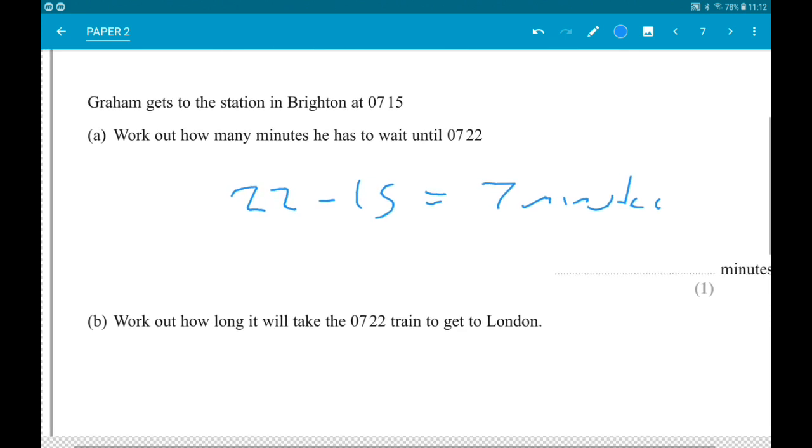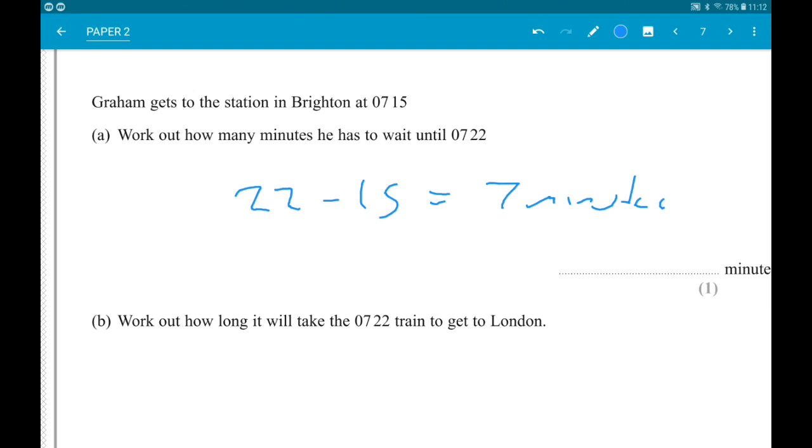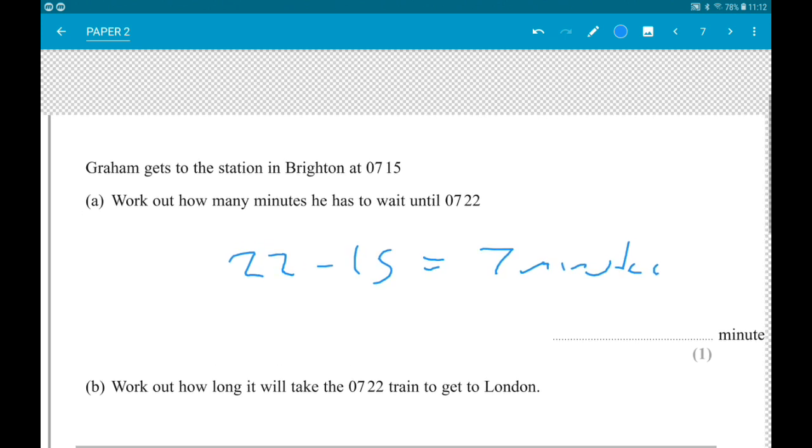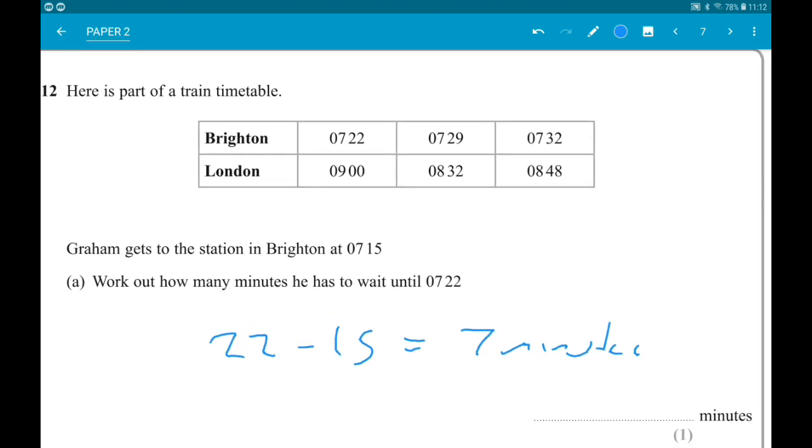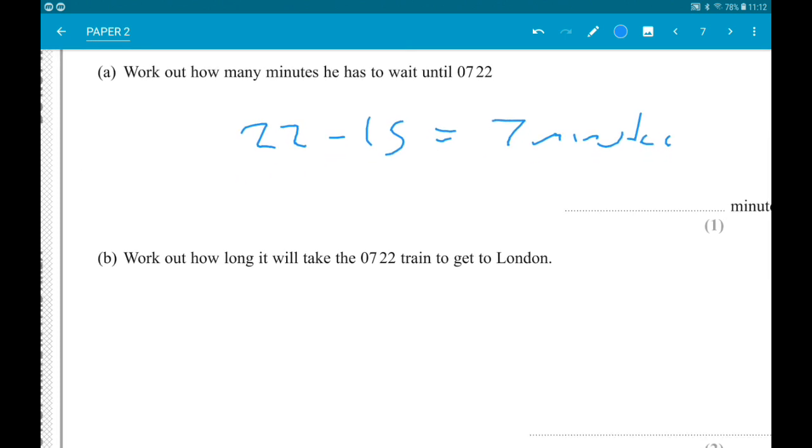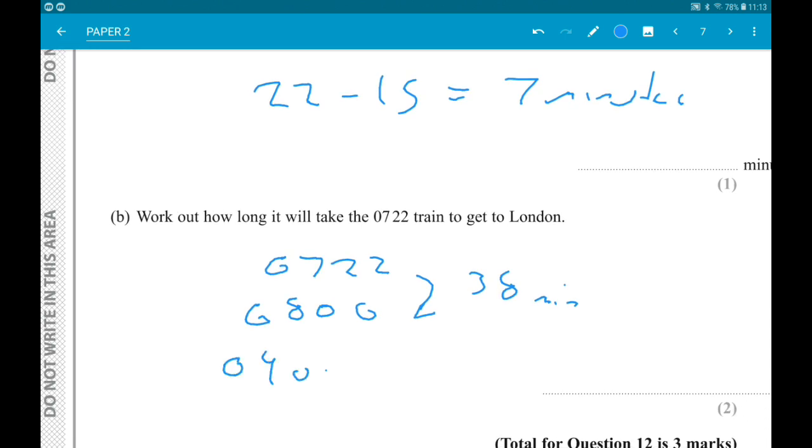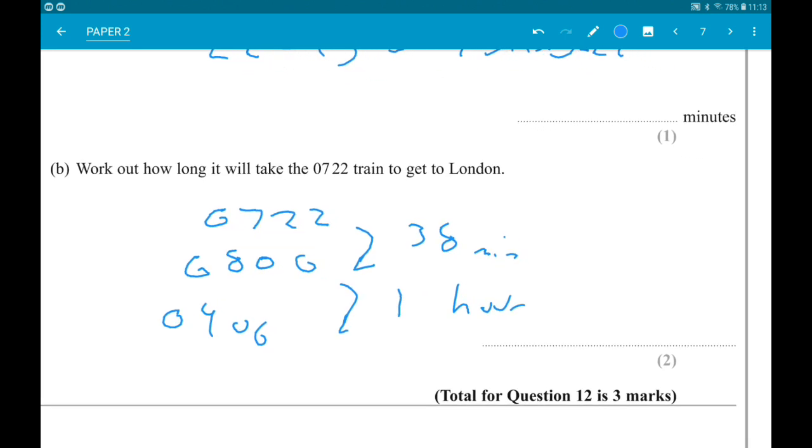Part B: Work out how long it will take the 7:22 train to get to London. The 7:22 gets to London at 9 o'clock. To get from 7:22 to 8 o'clock, that's 60 minus 22, so that's 38 minutes. Then from 8 to 9 o'clock is one hour. So the answer is one hour 38 minutes.